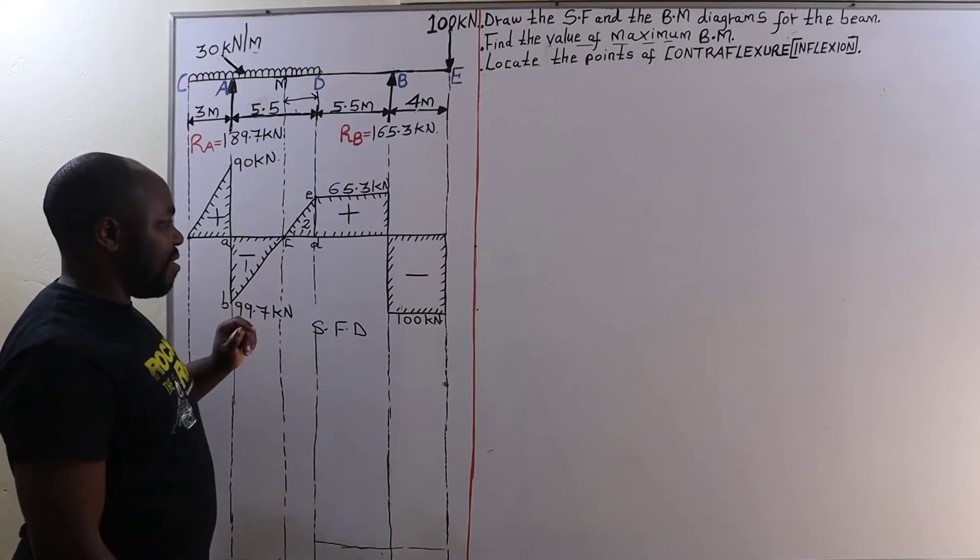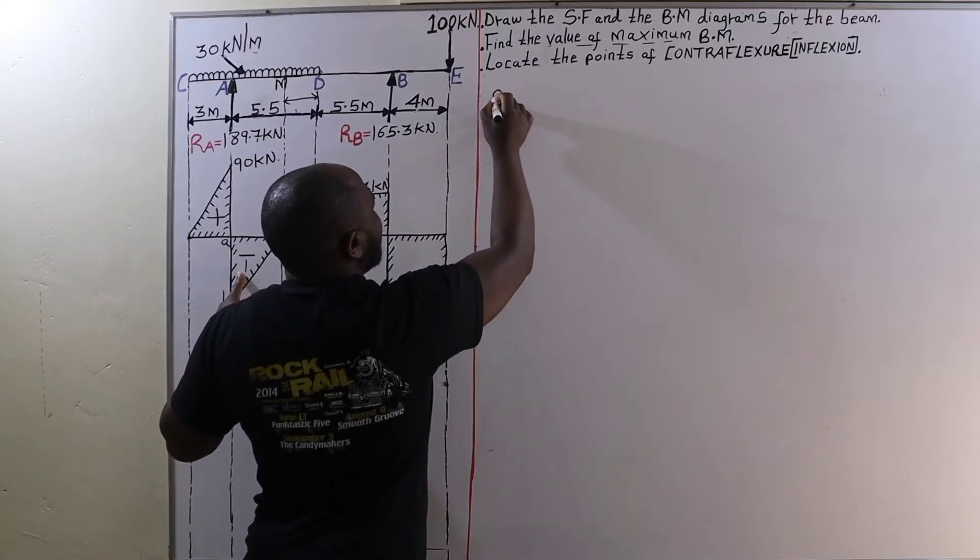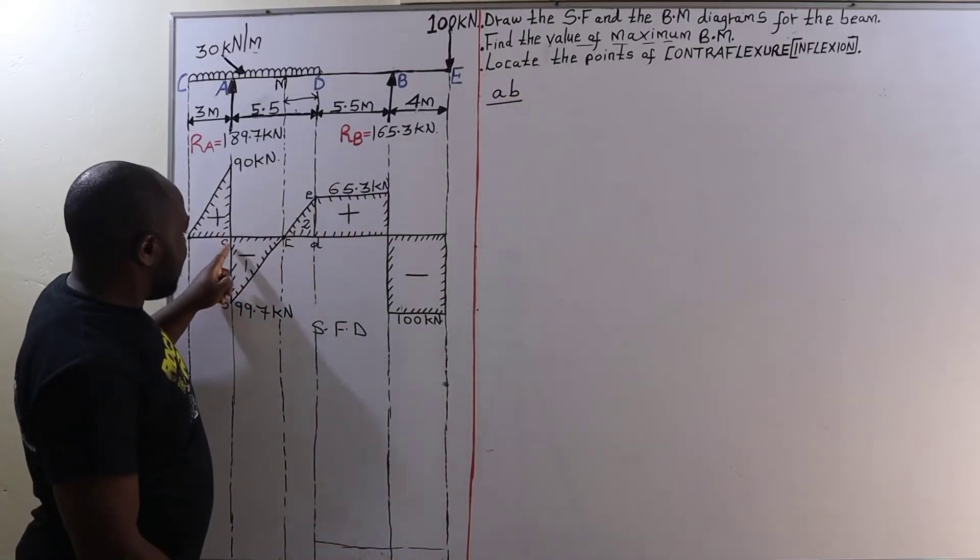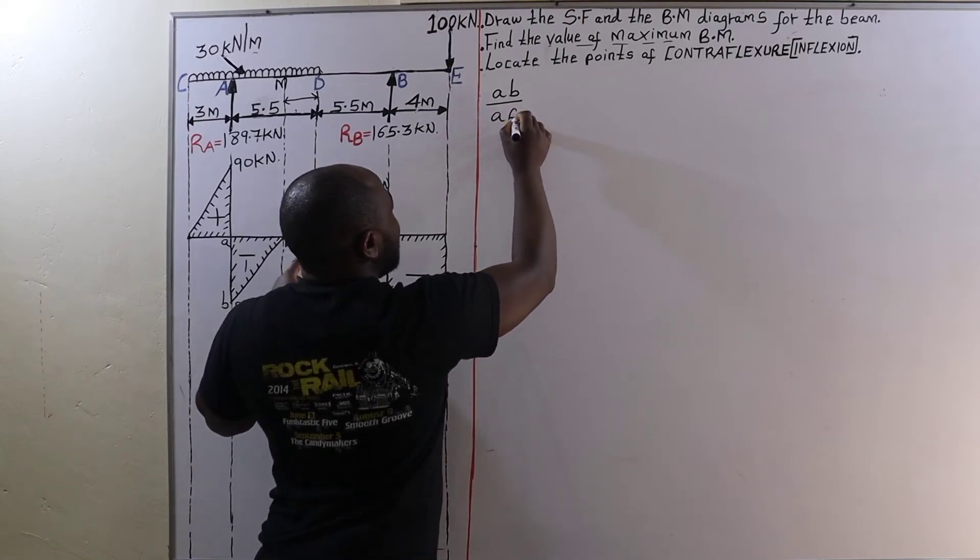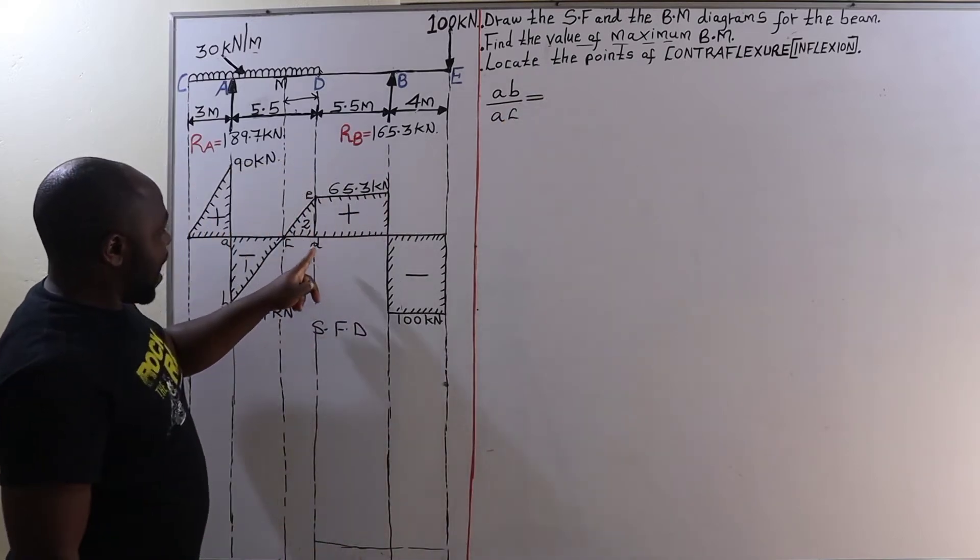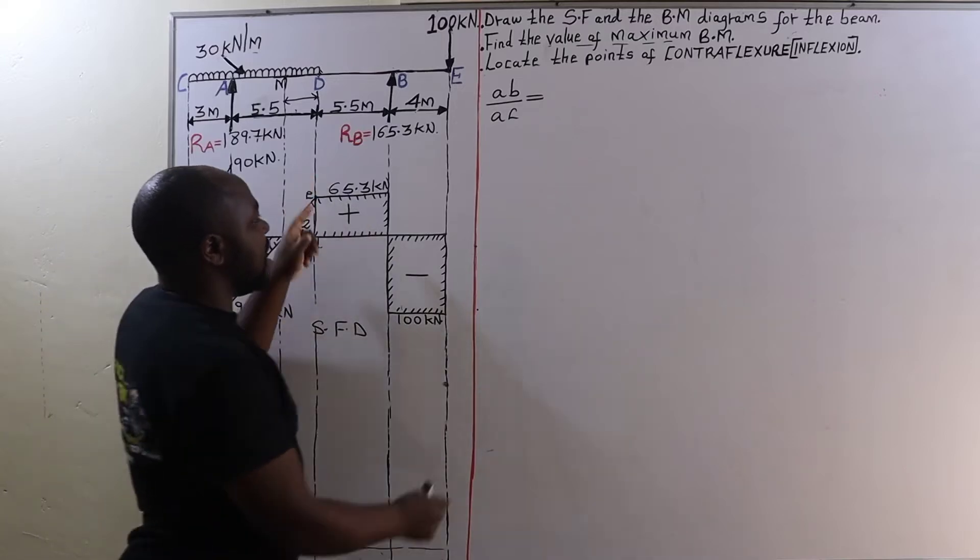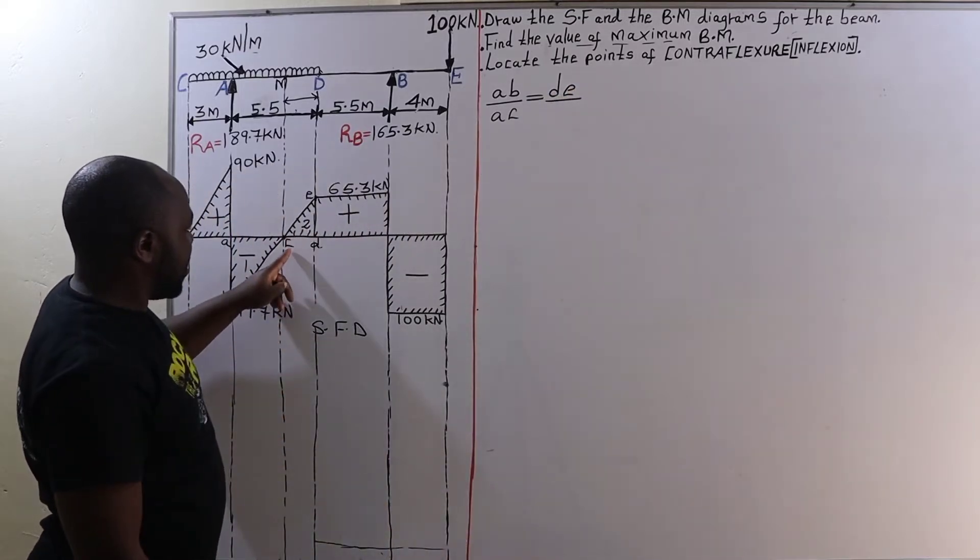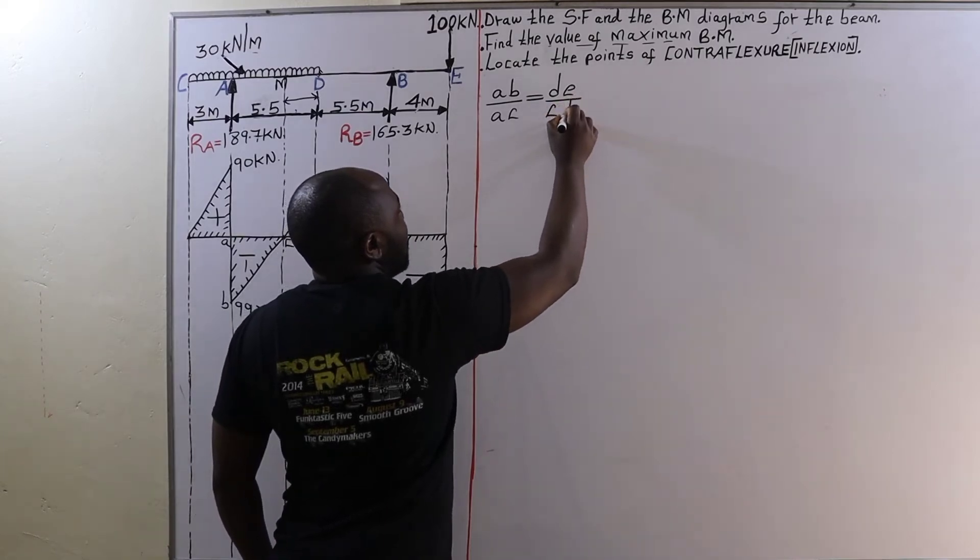Using similarity methods, I am going to have the height of this triangle 1 which is AB divided by its base which is AC, equals the height of triangle 2 which is C to D.